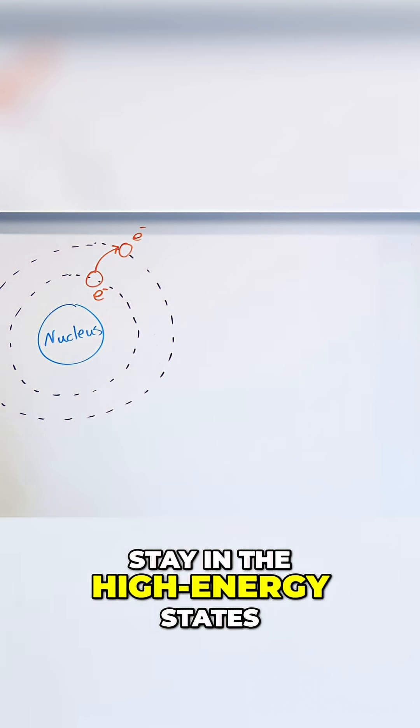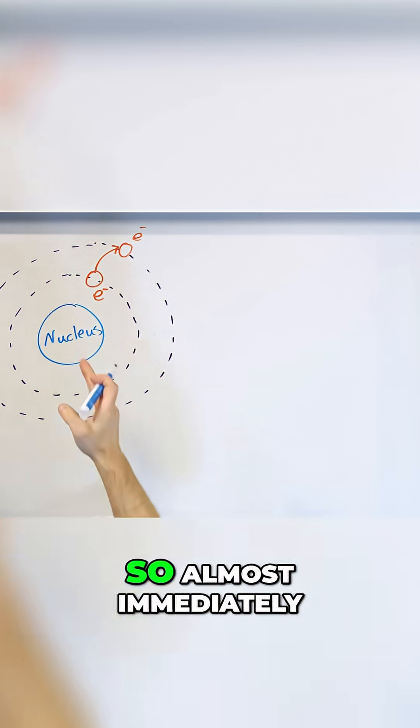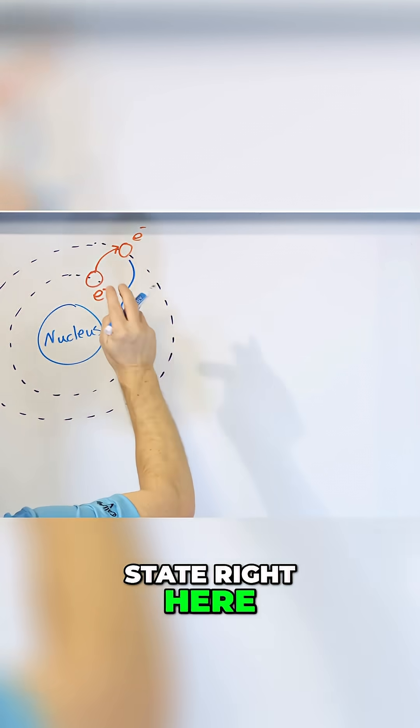They want to be as low as they can in a low energy state. So almost immediately this electron goes back down into this ground state right here. And during the process of falling in like this...